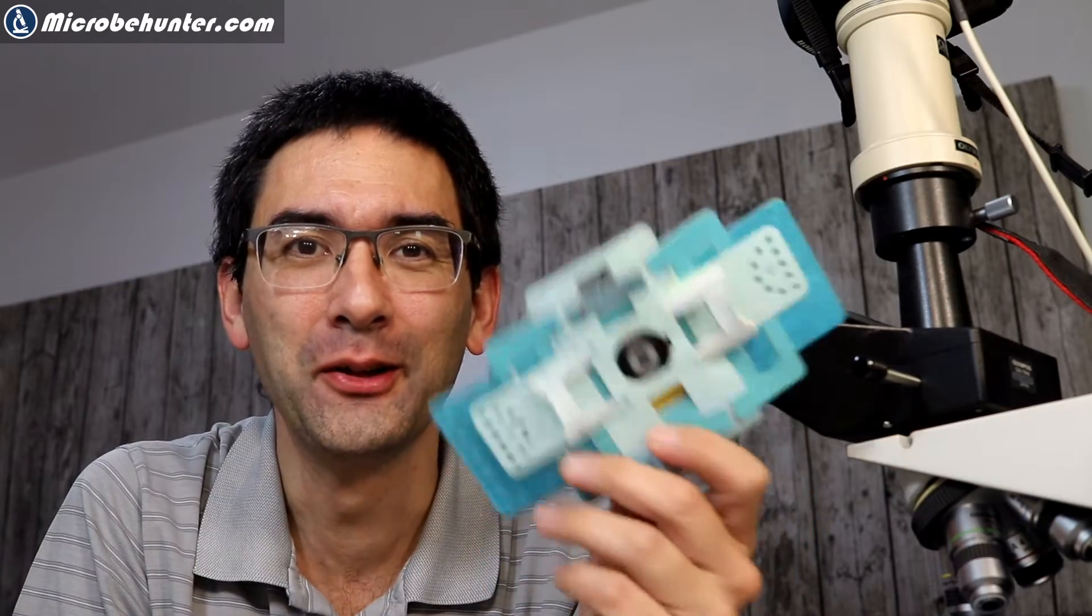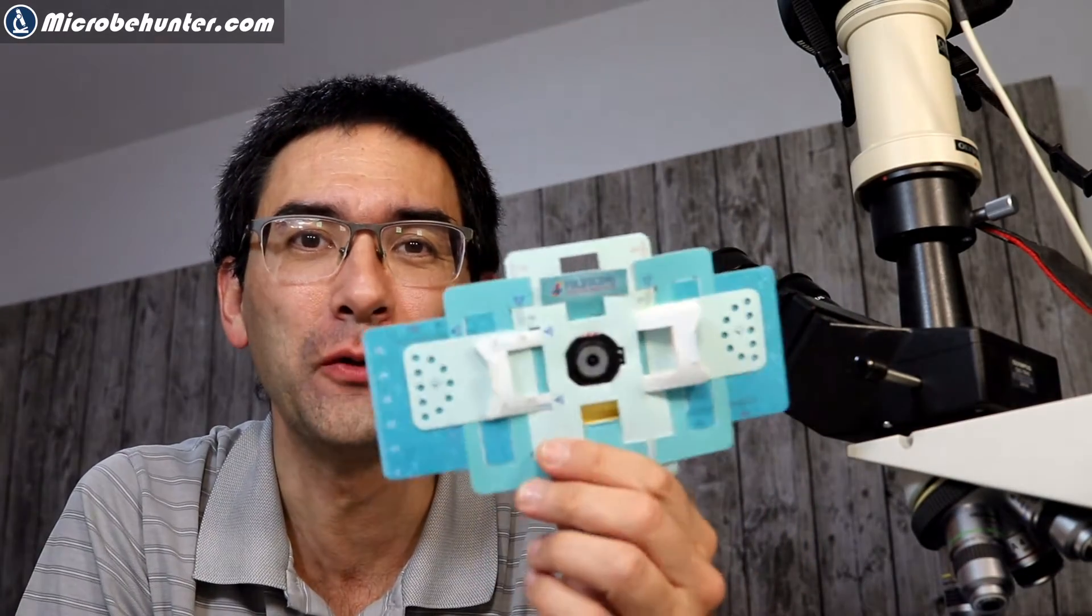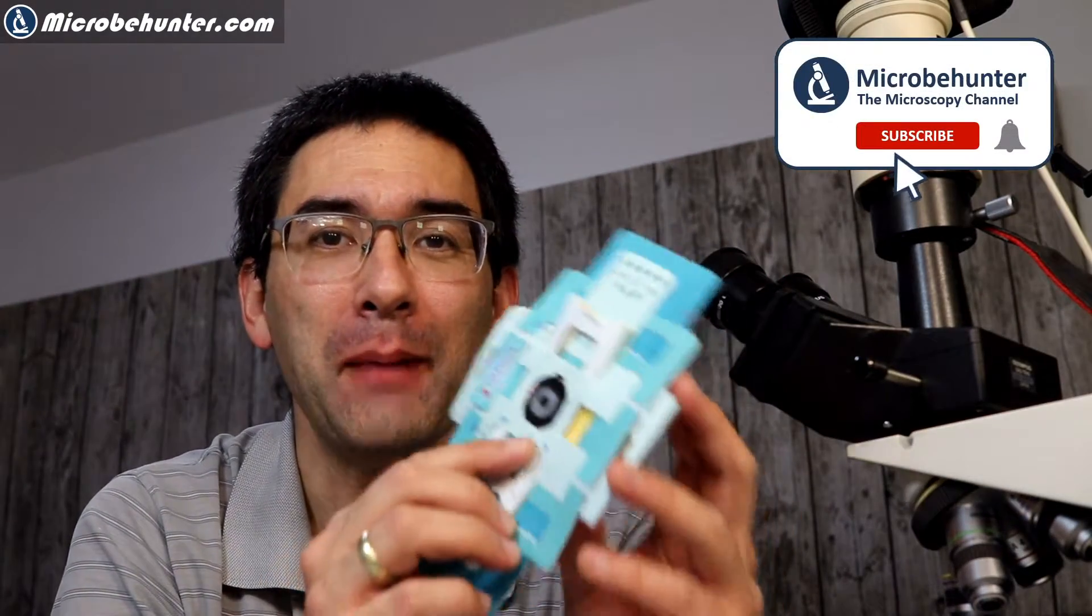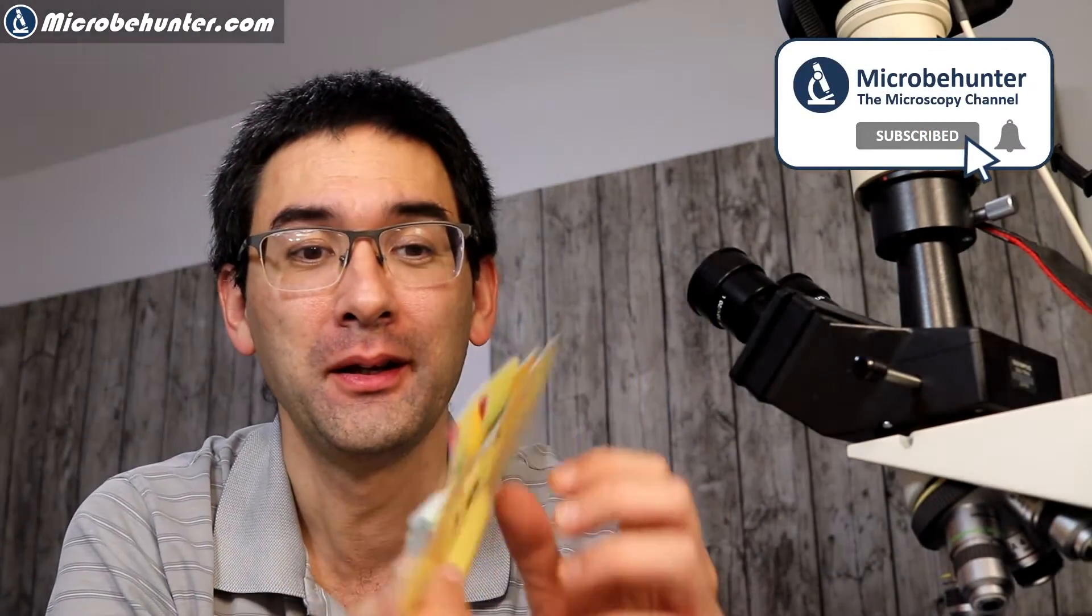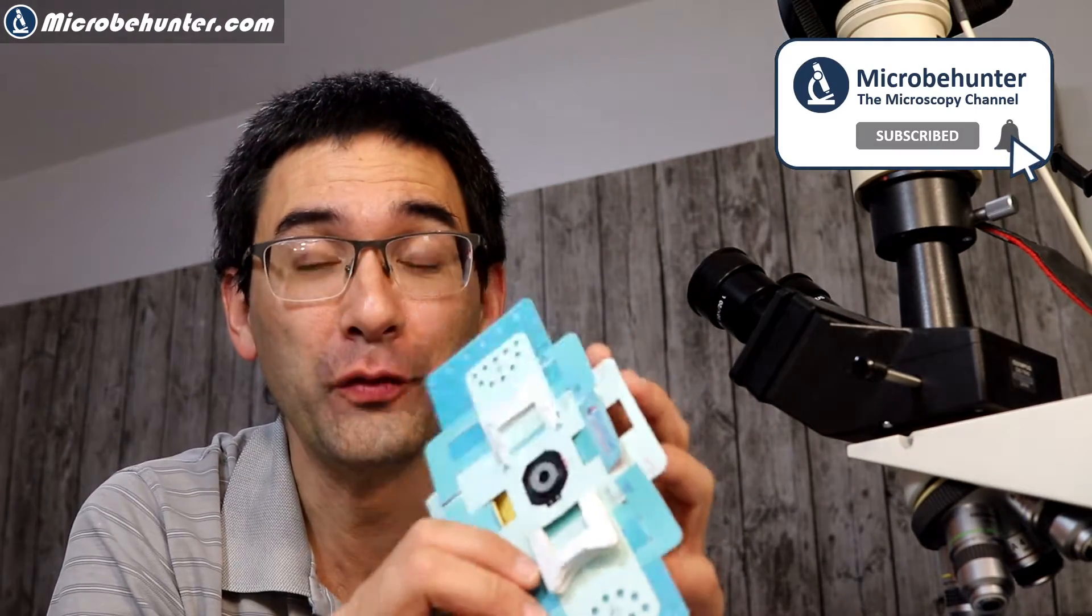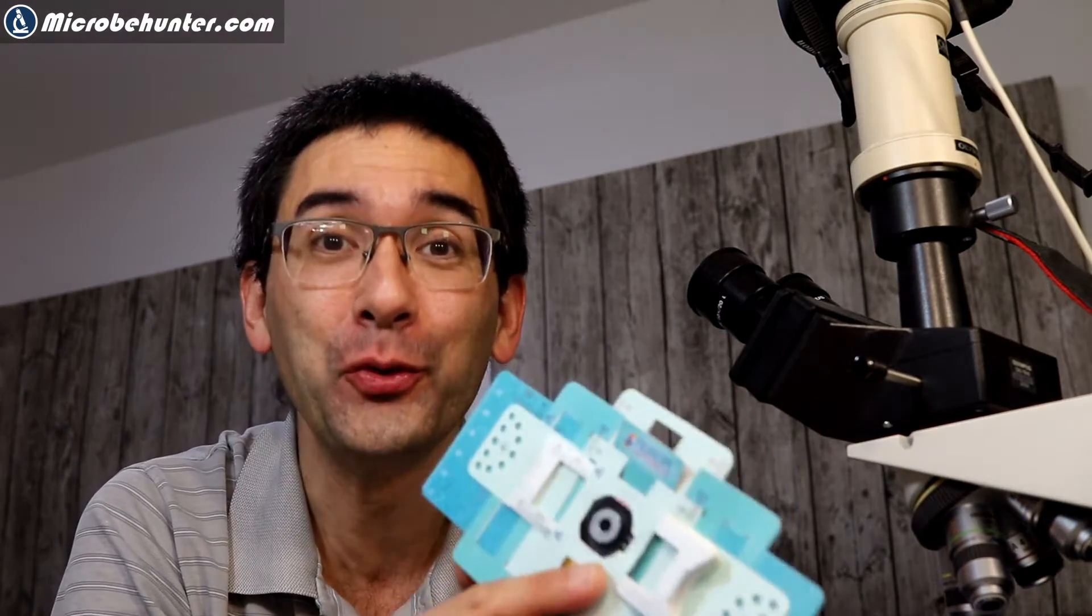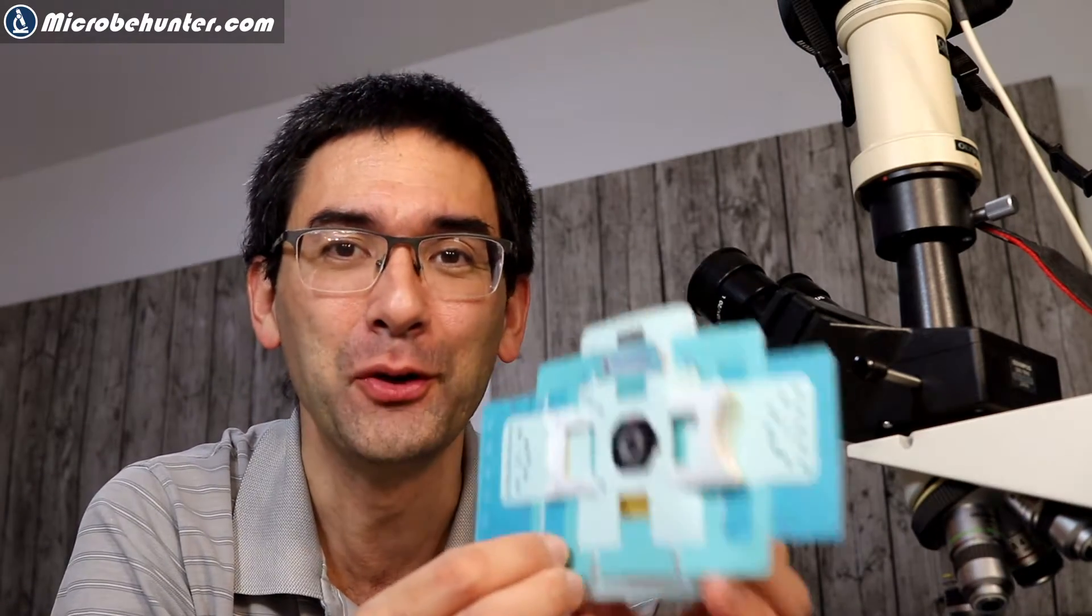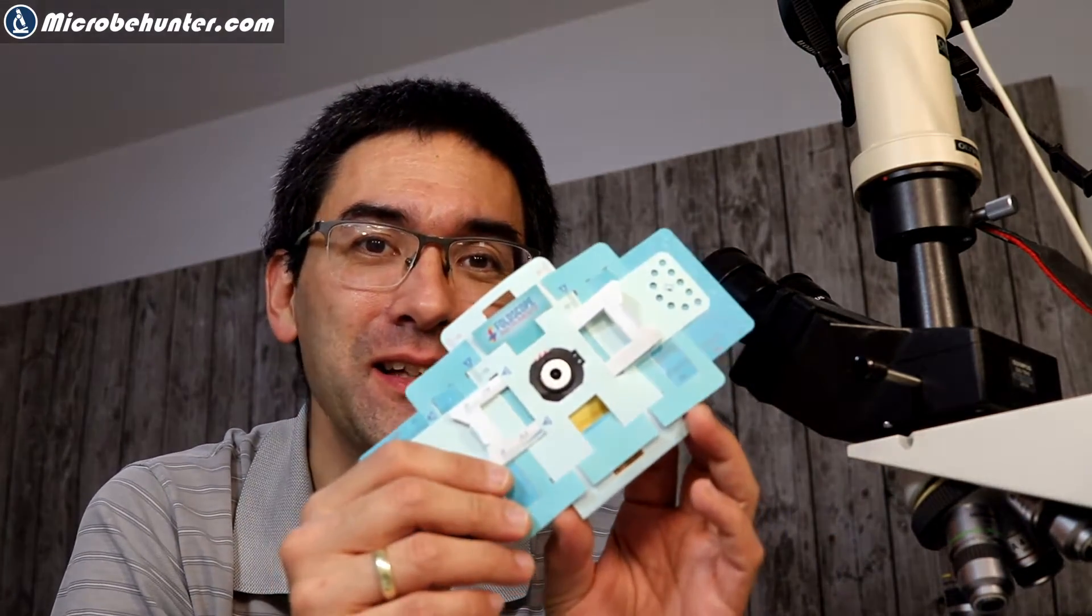So hi, Micropunter here again. Look what I got here. This is the so-called Foldscope. It is a single lens microscope and I got it. I bought it over eBay. I put it together. I want to show you in this video how I put it together and then I want to comment a little bit on this as I put it together. I think it's an interesting project. Let's get started.